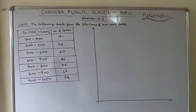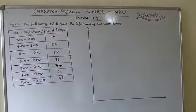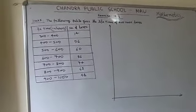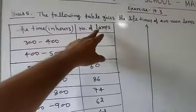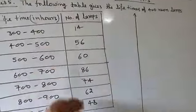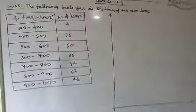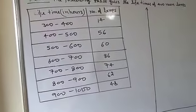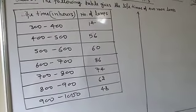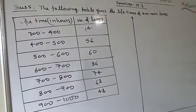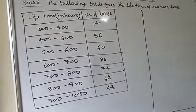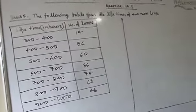Welcome once again students. Here is question number 5 of exercise 14.3. A table is given: the following table gives the lifetime of 400 neon lamps, with lifetime in hours and number of lamps — for example, 300 to 400 hours: 14 lamps; 400 to 500 hours: 56 lamps, and so on. Two parts are asked: first, represent the given information with a histogram; second, how many lamps have a lifetime of more than 700 hours.